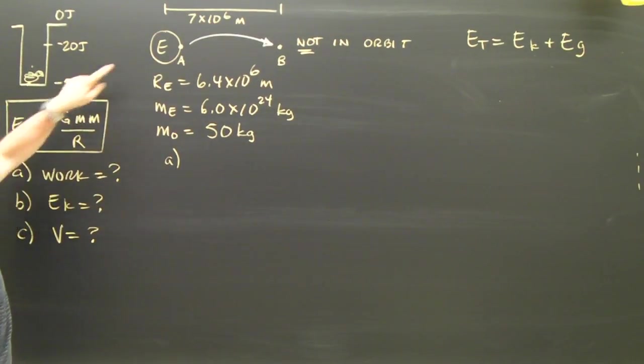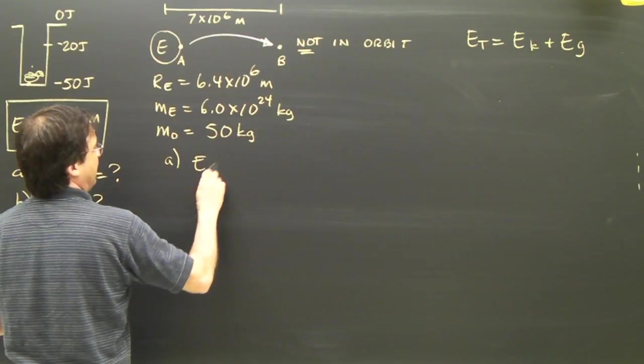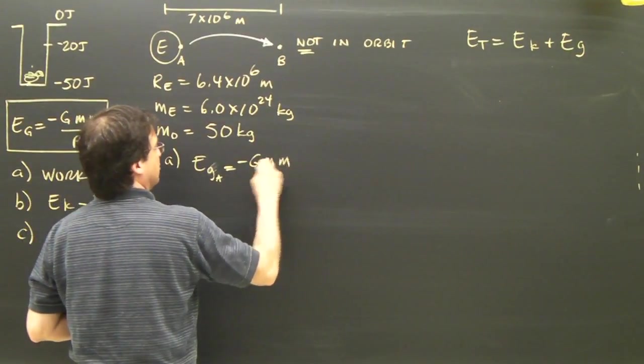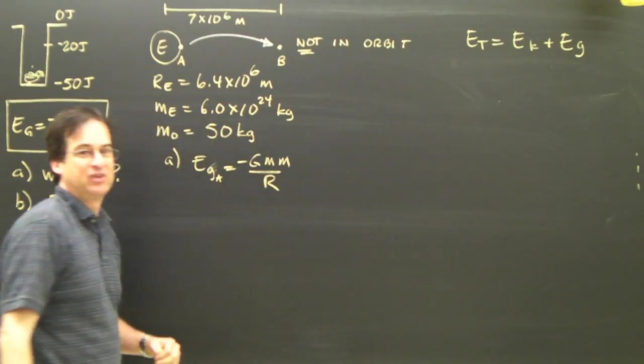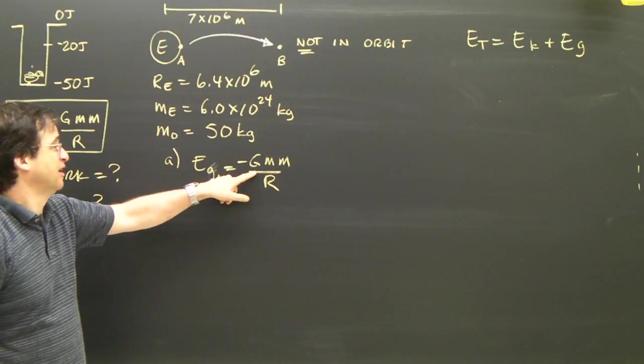A, calculating the work done. I need to know how much energy it has here. The energy at A is equal to negative GMM over R. G is a gravitational constant, 6.67 times 10 to minus 11.